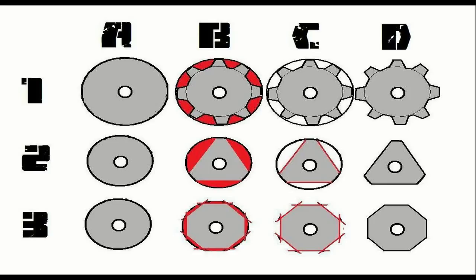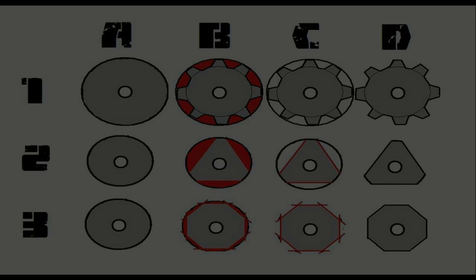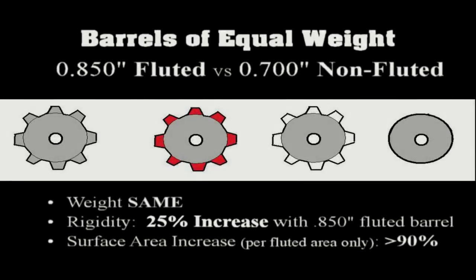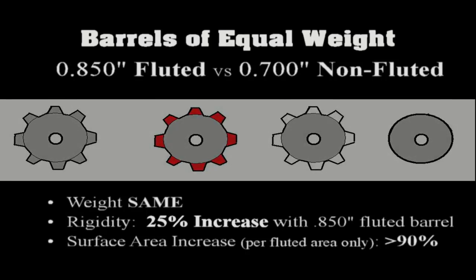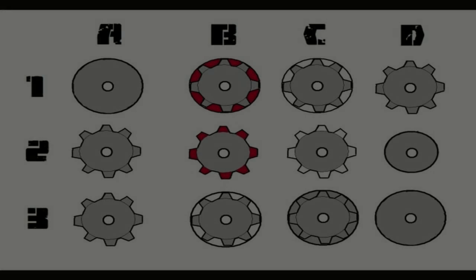My commentary on barrel fluting: I do like fluted barrels, I do have a few. It does remove some weight and does retain some rigidity — it will be less rigid anytime you remove material, but it does retain some of that rigidity, so it's a pretty good way to go. If you have two barrels of equal weight — one with a larger outside diameter with flutes and another with a smaller outside diameter without flutes — the fluted barrel will actually have more rigidity. If weight is the primary criteria, then fluting is a good idea. But if maximum rigidity is your criteria, for a target rifle or dedicated long-range rifle that's going to be pretty heavy anyway — like my big rifle that's almost 20 pounds — then a standard heavy barrel configuration with just a round bull barrel is your choice. Round heavy bull barrels with the largest diameters are going to have the maximum rigidity.